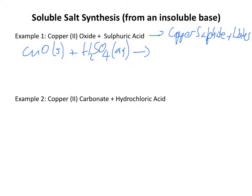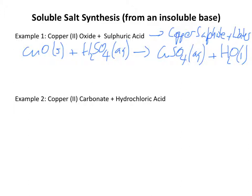We make copper sulphate: copper has a valency of 2 and sulphate also has a valency of 2, so it's CuSO₄ (aqueous, because the copper sulphate is dissolved in water). We also make water, H₂O, which is a liquid. Students occasionally write aqueous for water, but aqueous is only used for substances dissolved in water, not for water itself.